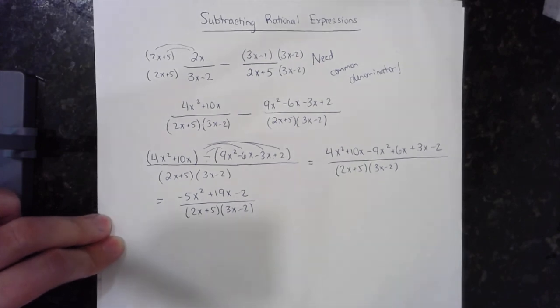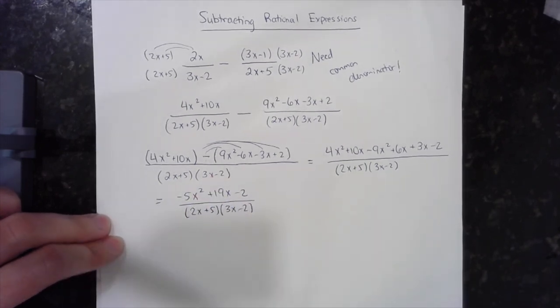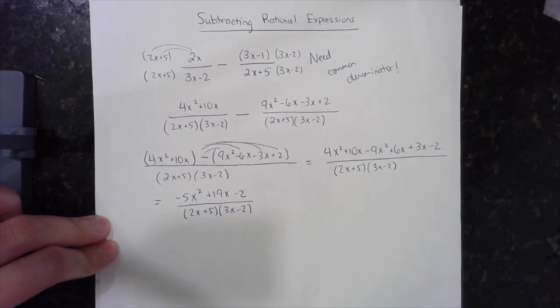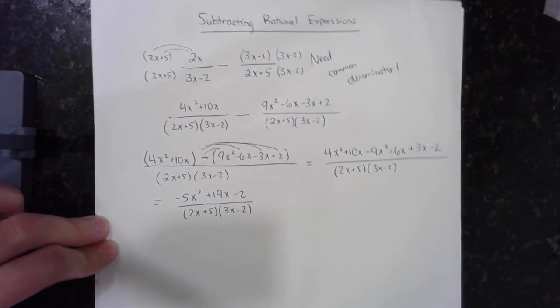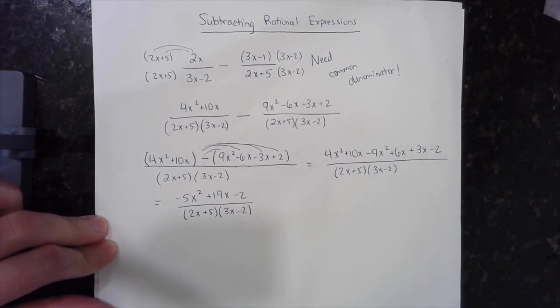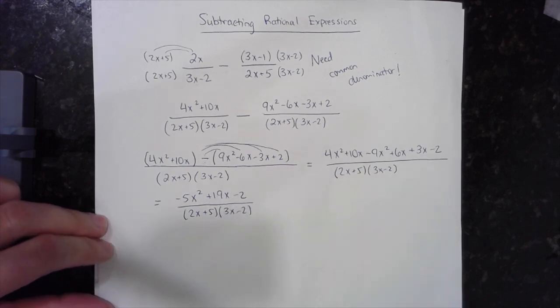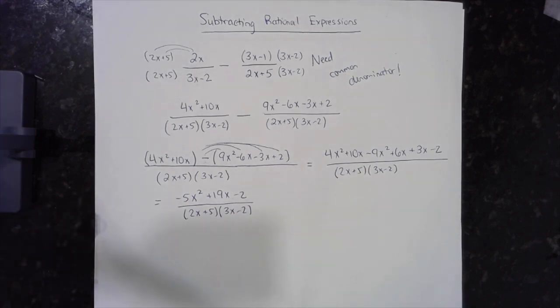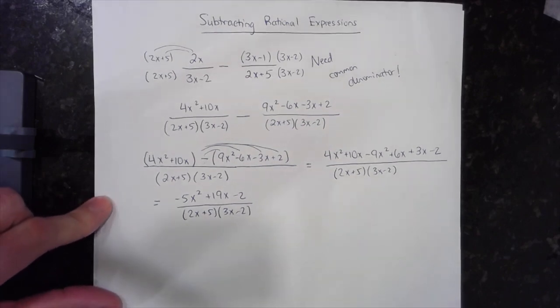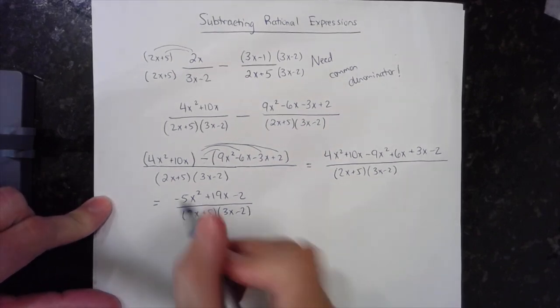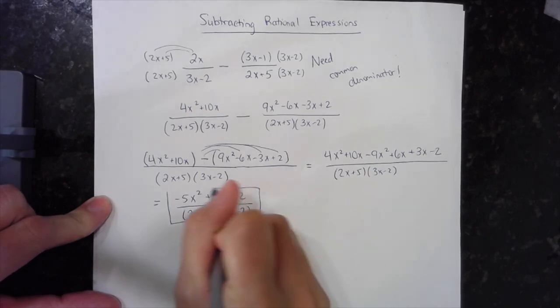Now technically, if the numerator did factor, which looking at it, it doesn't factor. If the numerator did factor, I would want to factor it and see if there's anything on top that I have in common with the bottom, which will simplify my fraction further. In this particular example, I cannot factor the top, so I can leave this as my final difference.